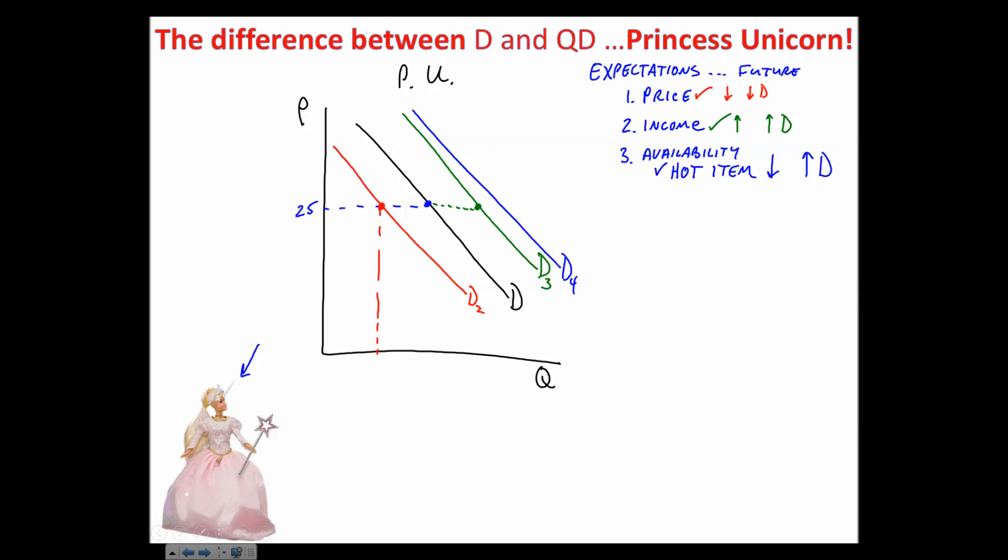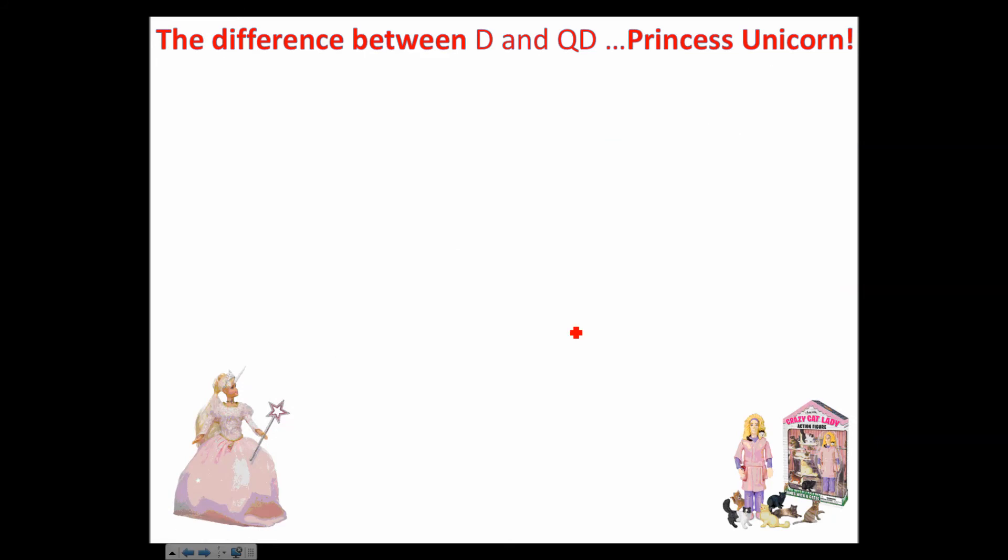Notice again though, as demand changes, people buy more, but notice the price did not change - it stayed at $25. But people still change their buying habits. Again though, when the price does change, that results in changes along the exact same curve. So we refer to those as changes in quantity demanded.